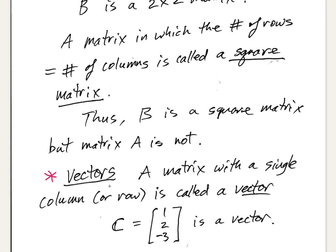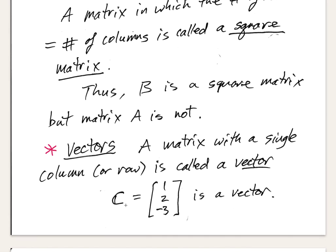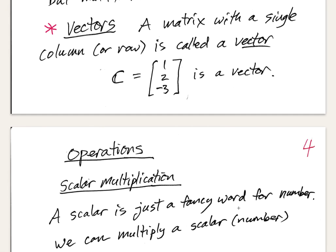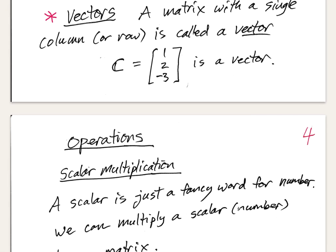A matrix with a single column or a single row is called a vector. For example, matrix C with entries 1, 2, -3 arranged in a single column is what we would call a column vector. This terminology is very common in physics and linear algebra.